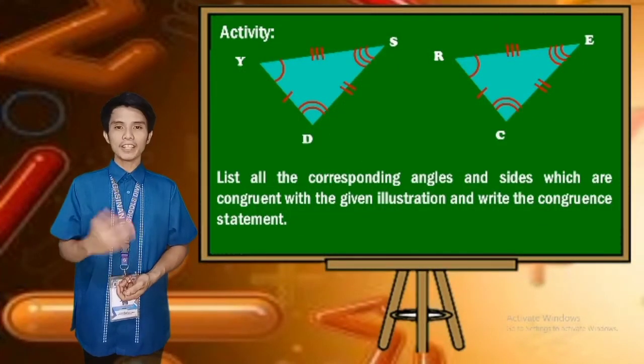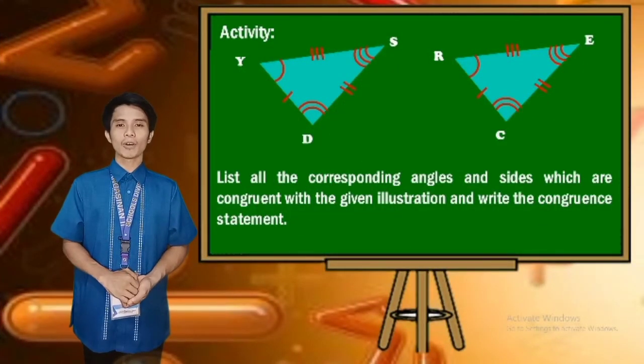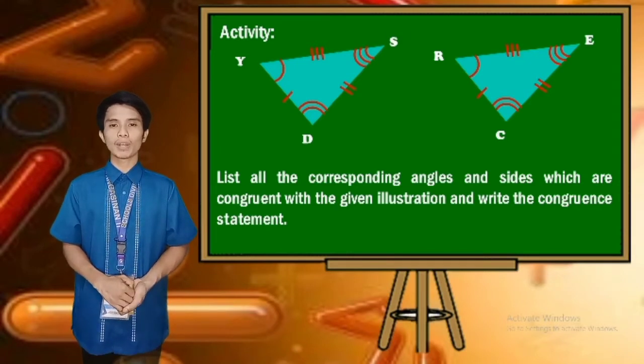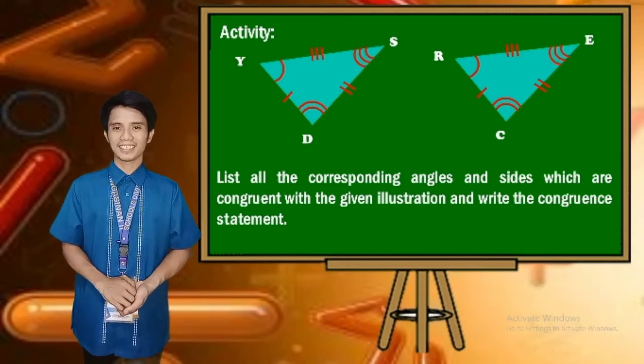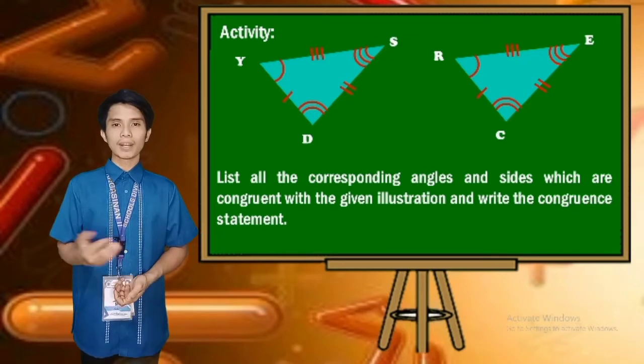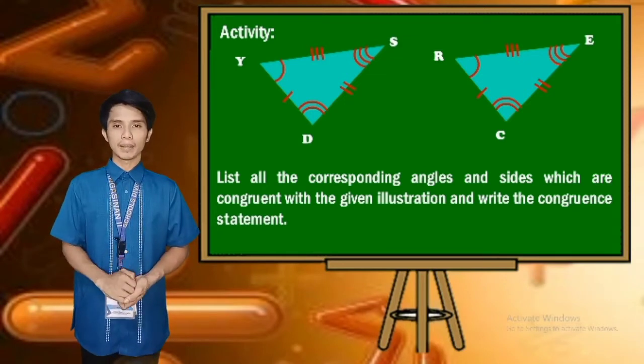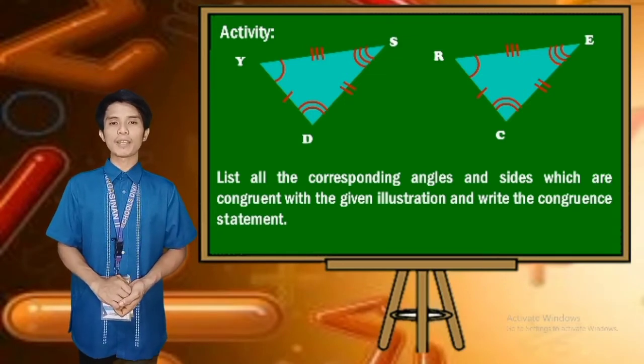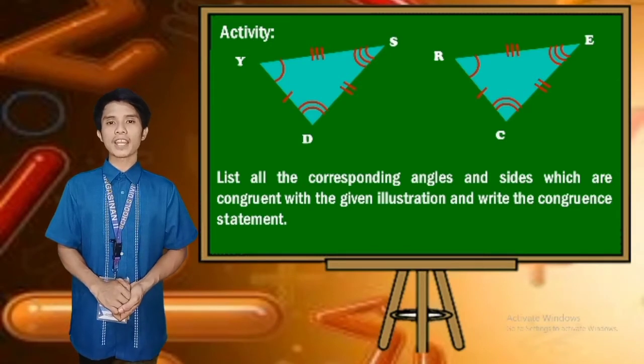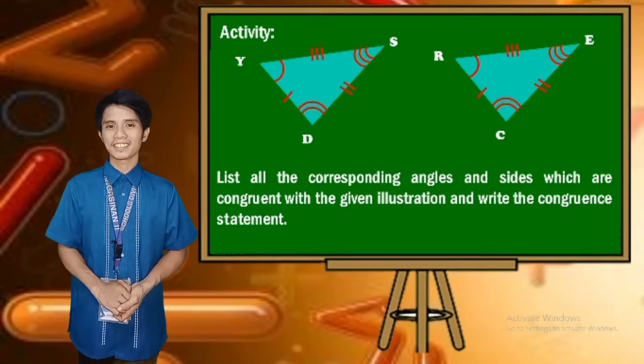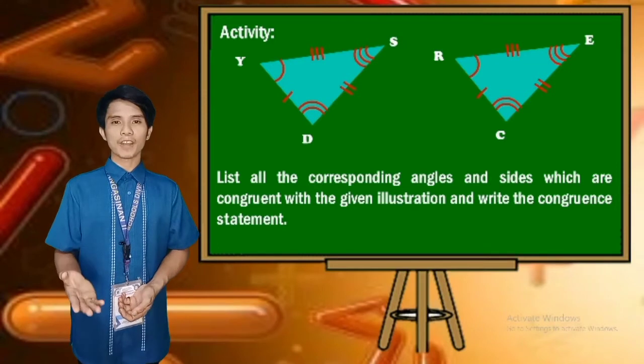Now, it's your turn. List all the corresponding angles and sides which are congruent in the given illustration. Then write the congruence statement. Place your answer on a piece of paper. I will give you 60 seconds to finish the task. Your timer starts now.